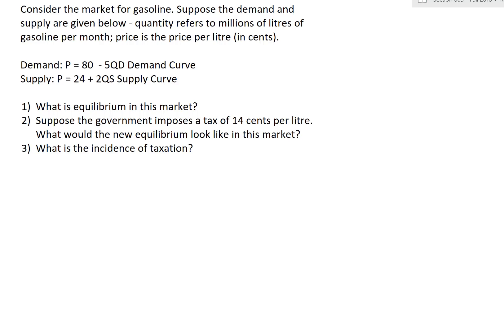For question one, what is the equilibrium in this market? We invoke our equilibrium condition to find the price and quantity where the two curves cross each other. We have demand: P equals 80 minus 5QD, and supply: P equals 24 plus 2QS.